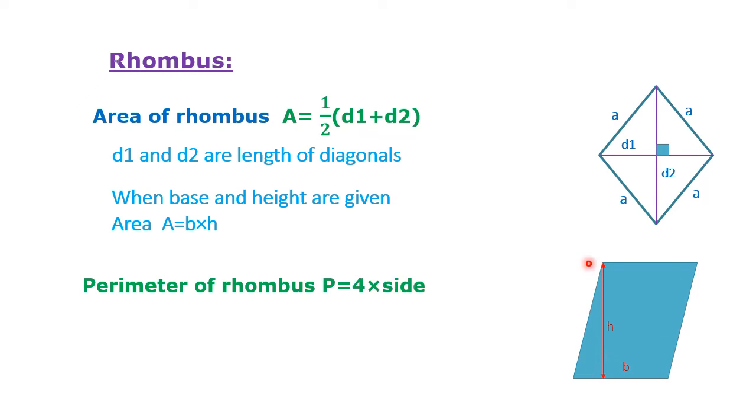Perimeter of rhombus P equals 4 times side. So P equals 4 times A, which equals 4A.